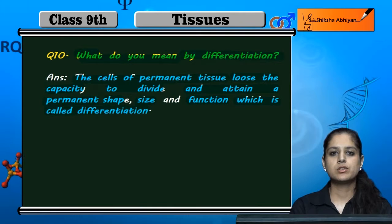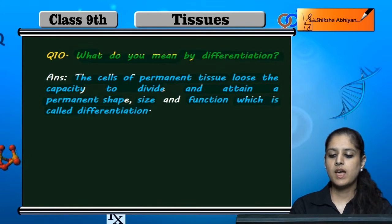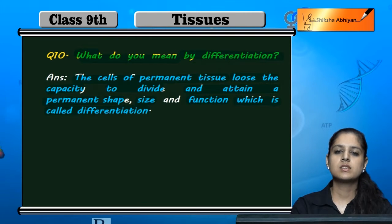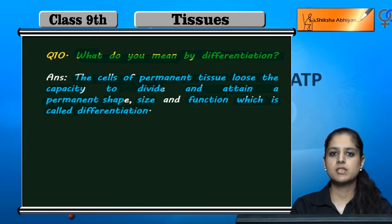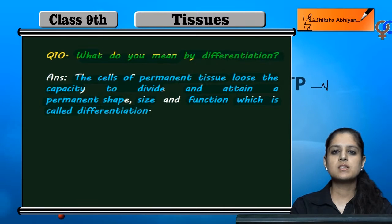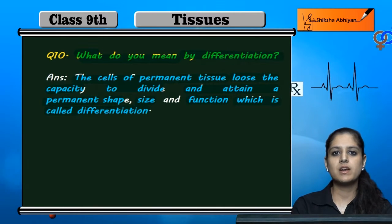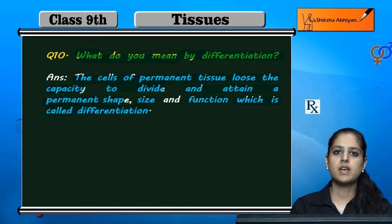The permanent tissue that is made from cells has a stage where the capacity to divide is lost. That means no division takes place, no multiplication takes place. So what happens in this condition? They acquire a permanent shape and function. And this scenario is called differentiation.